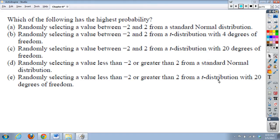Next up, number 6. Which of the following has the highest probability? Randomly selecting a value between negative 2 and 2 from the standard normal distribution, negative 2 and 2 on a t-distribution with 4 degrees of freedom, negative 2 and 2 with a t-distribution of 20 degrees of freedom, less than negative 2 or greater than 2 from a standard normal distribution, less than negative 2 or greater than 2 from a t-distribution with 20 degrees of freedom. So if you want to pause and kind of think about this one, knock yourself out. Otherwise, I'm going to continue.